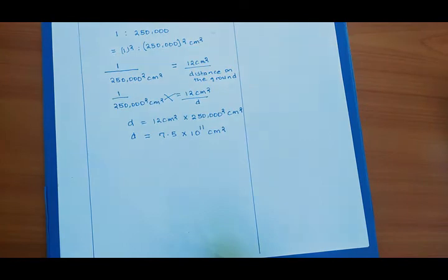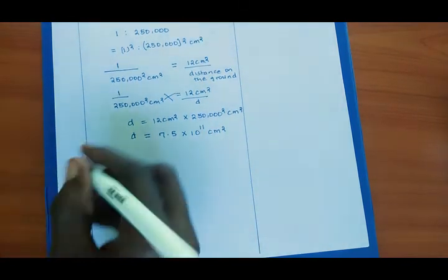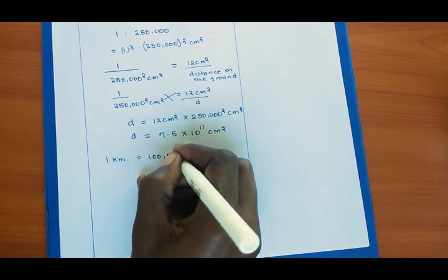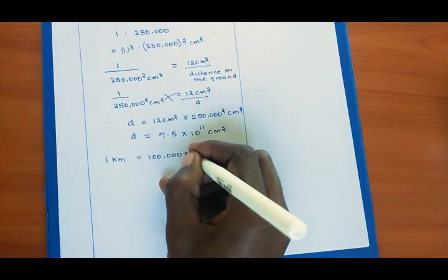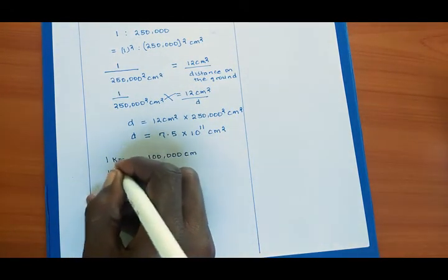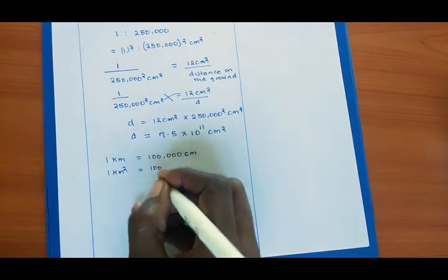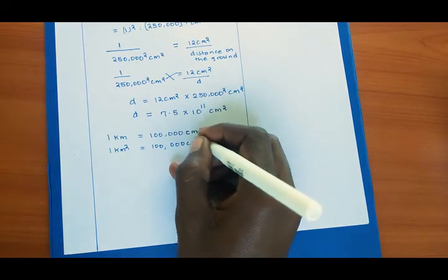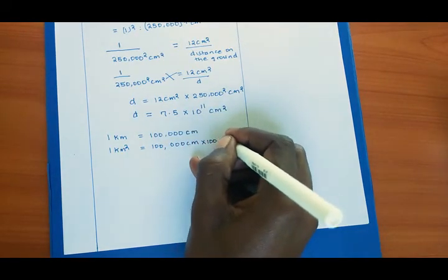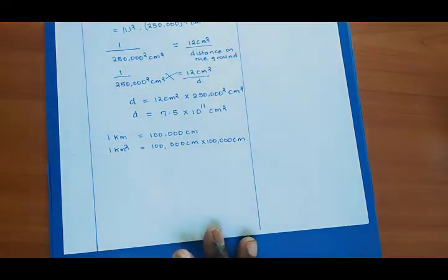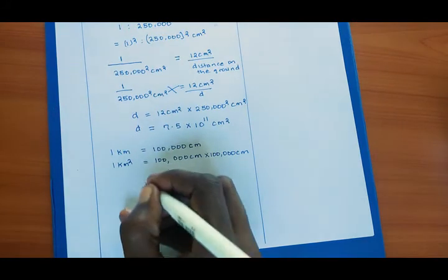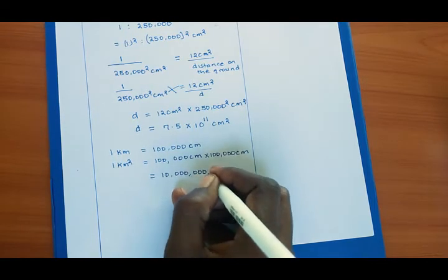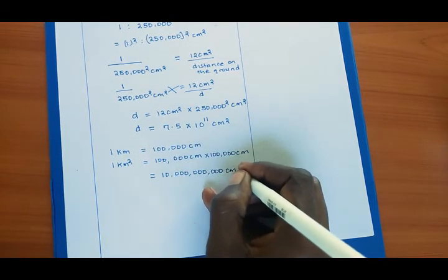But then they need the actual distance in kilometers squared. So one kilometer will give us 100,000 centimeters, meaning one kilometer squared will give us 100,000 centimeters squared, which is 10 to the power 10 square centimeters.